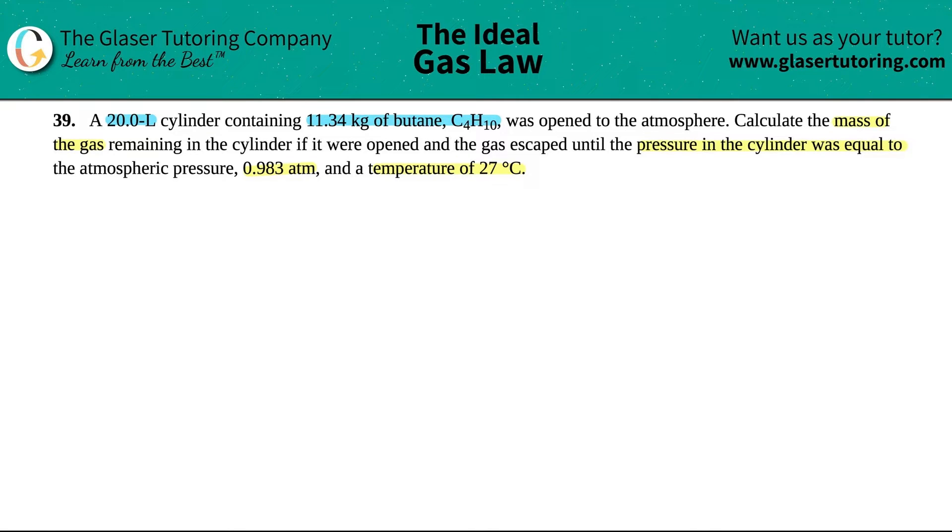Okay. So in this case, let's see what's going on. With the gas chapter and our pressures, the easiest thing is to list out every variable that you have, and then we can find a formula from there. So they said that we had a 20.0 liter cylinder. So that's a volume. So I have a volume of 20.0 liters, and it contained this amount of mass of butane. Kilogram is a mass. So I have an M value, 11.34 kilograms of butane, which is C4H10.